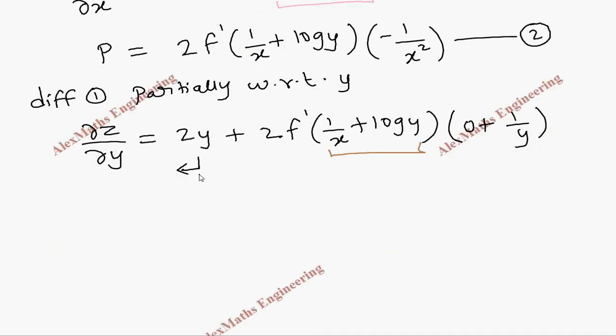Now we can carry this 2y to this side. So q - 2y = 2f'(1/x + log y) × (1/y), which is termed as the third expression.